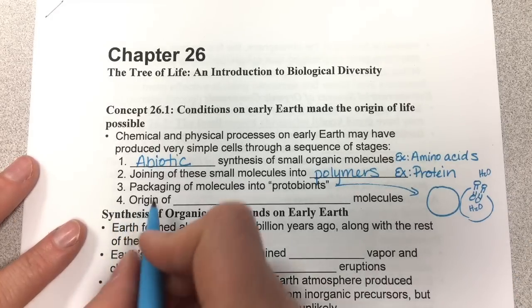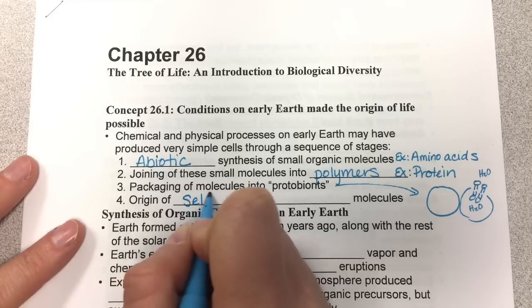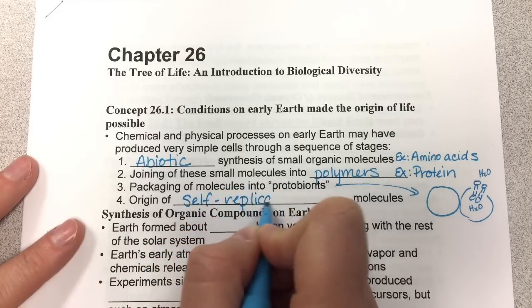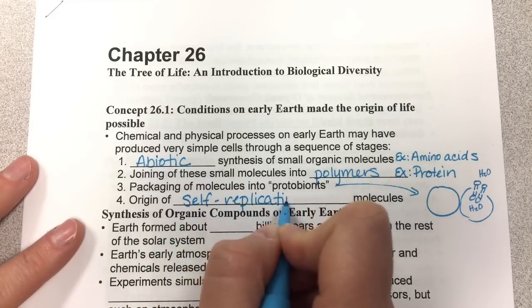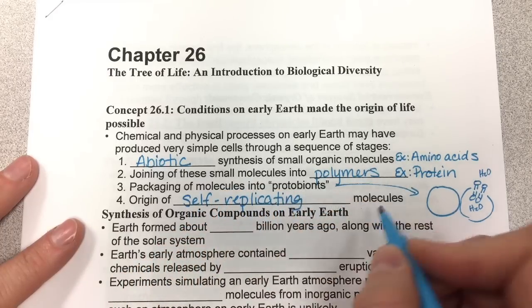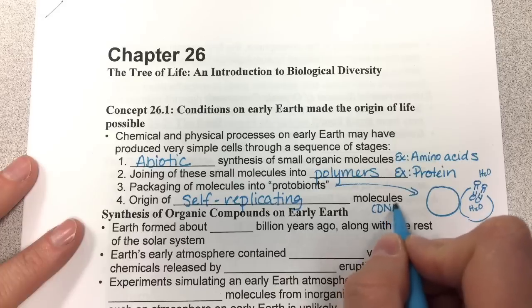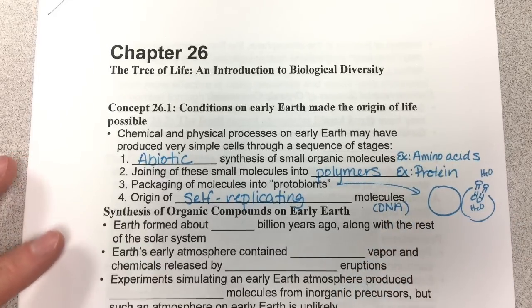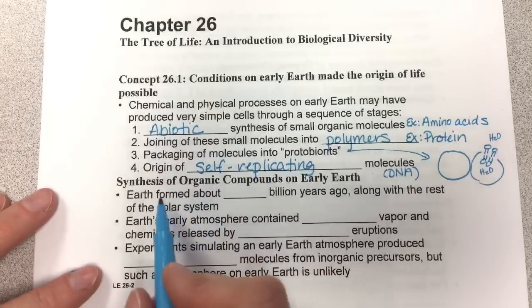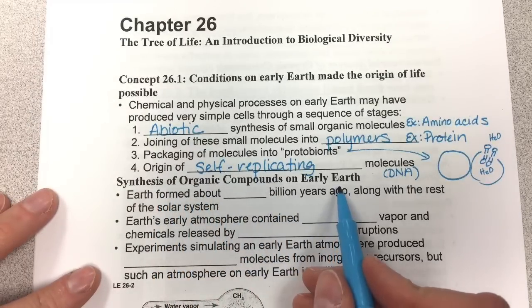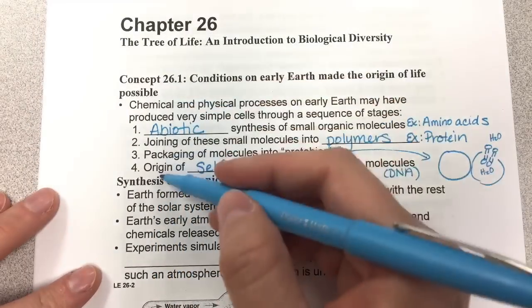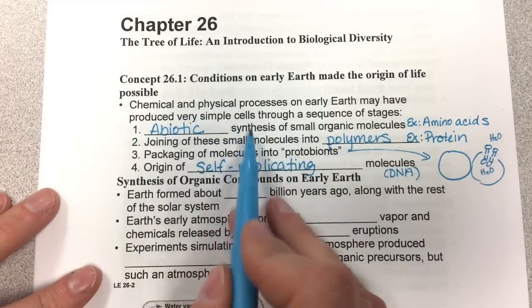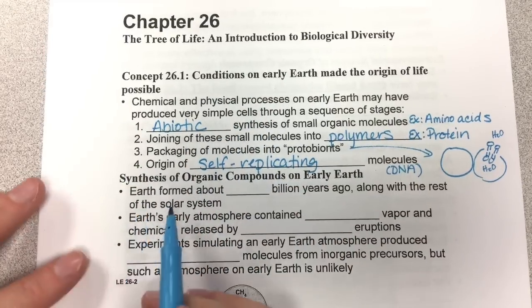Step four is the origin of self-replicating molecules. Self-replicating would be DNA or RNA. So those are the four steps, and we're going to talk about that first step — synthesis — here.